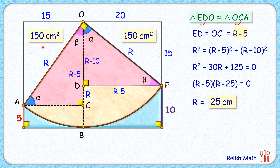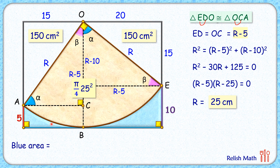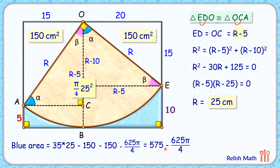The area of the second triangle is also 150 centimeters squared. The area of the quadrant is π/4 times r², which is π/4 times 25², giving 625π/4. The area of the blue region equals the area of the full rectangle (35 × 25) minus the area of the first triangle (150) minus the area of the second triangle (150) minus the area of the quadrant sector. Simplifying gives 575 minus 625π/4, which in decimal form is approximately 84.13 centimeters squared. That's our answer — hope you enjoyed the solution!